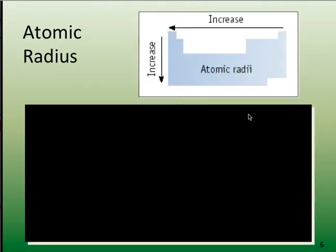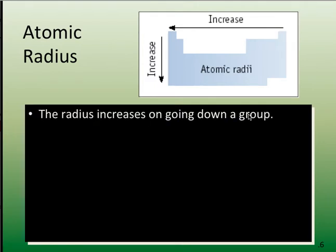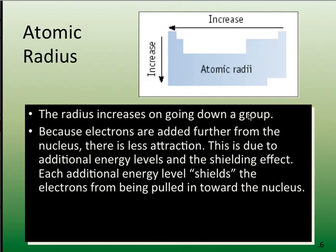So let's talk about the atomic radius and what happens as I go down a group or across a period. As I go down a group, every time I go to the next period in the periodic table, I'm adding an energy level. I'm increasing that shielding effect, adding layers on an onion. The atomic radius increases as I go down a group because the attractive force between those outer electrons and the nucleus is less.